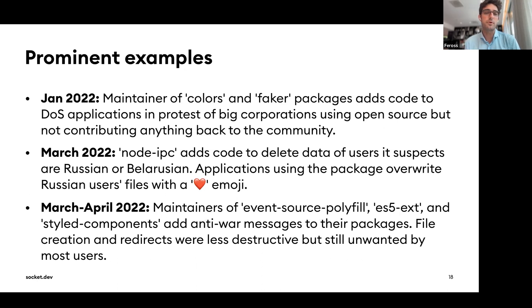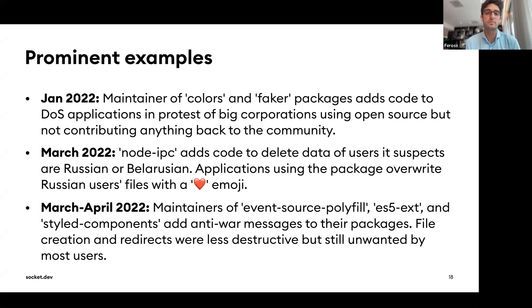In March, the node-ipc package added code to delete the data of users it thought were coming from Russia or Belarus using geo-IP detection. If it detected your IP was from one of those countries, it would loop over every file on your computer and overwrite your files with a heart emoji — effectively an rm -rf of your hard drive. This affected anyone running a VPN, plus schools and hospitals in those countries.